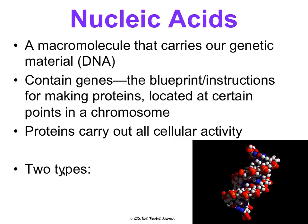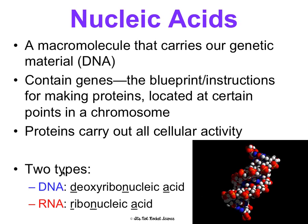There are two types of nucleic acids: DNA, which stands for deoxyribonucleic acid, and RNA, which stands for ribonucleic acid. DNA and RNA have different sugars in them. DNA has deoxyribose, and RNA has ribose, so they kind of get their name after what sugar makes them up.